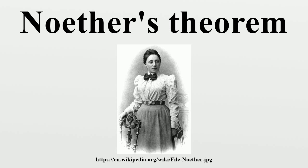The earliest constants of motion discovered were momentum and energy, which were proposed in the 17th century by René Descartes and Gottfried Leibniz on the basis of collision experiments, and refined by subsequent researchers. Isaac Newton was the first to enunciate the conservation of momentum in its modern form, and showed that it was a consequence of Newton's third law.